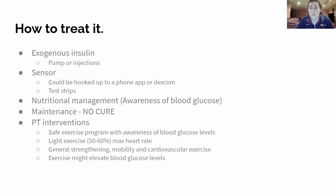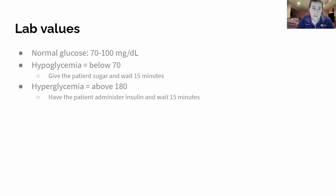If a type 1 diabetic would like to be more on the athletic level, it can happen — it just takes a lot of maintenance and body awareness. Lab values — these are really important. Keep an eye on this side right here.